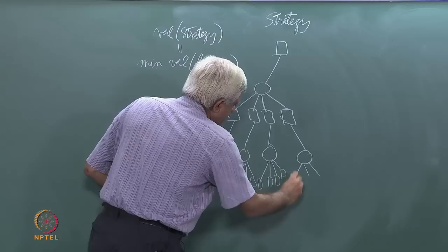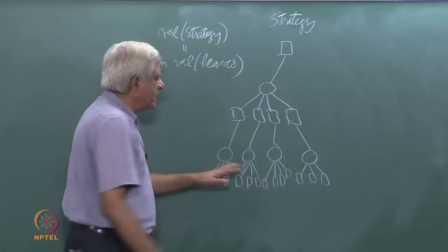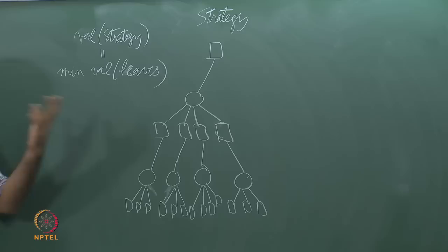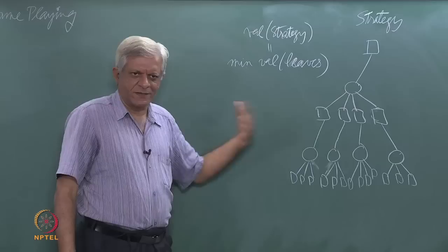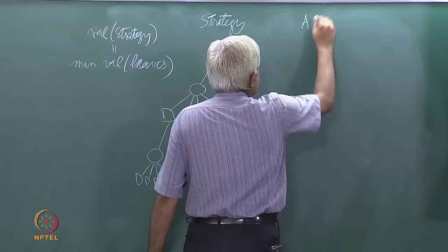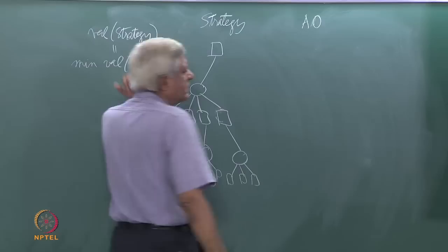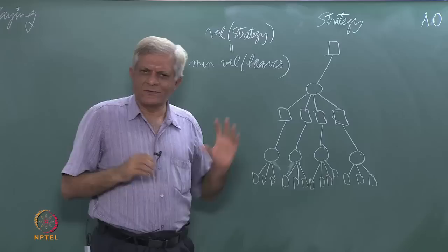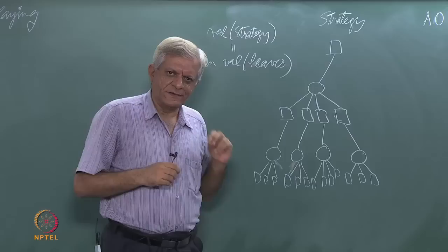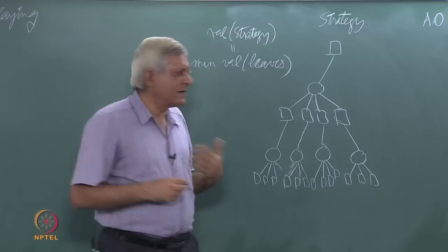Remember, the strategy is the subtree, and the value of the game will be the minimum of the values of the leaves, assuming that the opponent is perfect. Now, if you look at an AND-OR graph, we viewed a solution in an AND-OR graph. At OR level, you have to choose one, and at AND level, you have to make all choices.